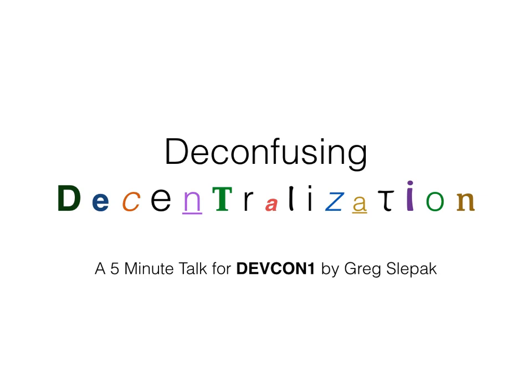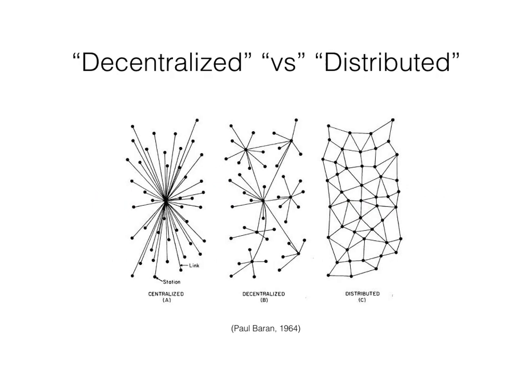Hi, my name is Greg Slupak, and I'm here to de-confuse some of the confusion surrounding the word decentralization. Many of you have probably seen this graphic before. It comes from a 1964 paper written by Paul Baran, and he was using it to describe some of the properties of network topologies.